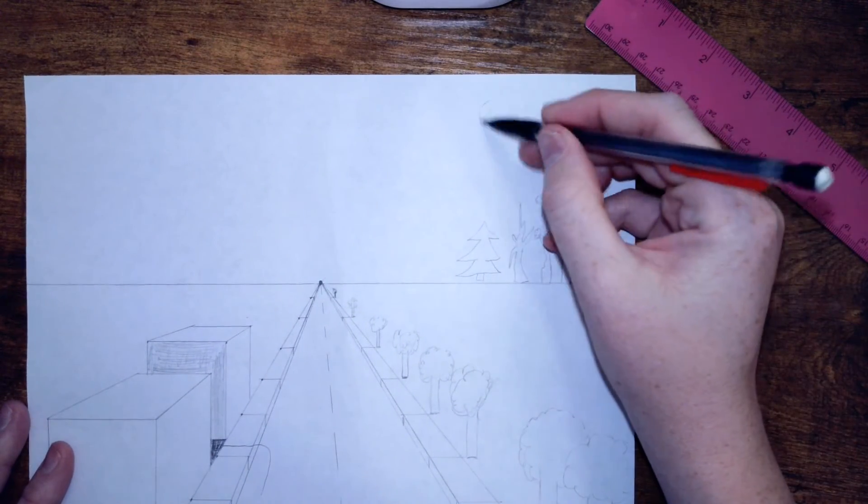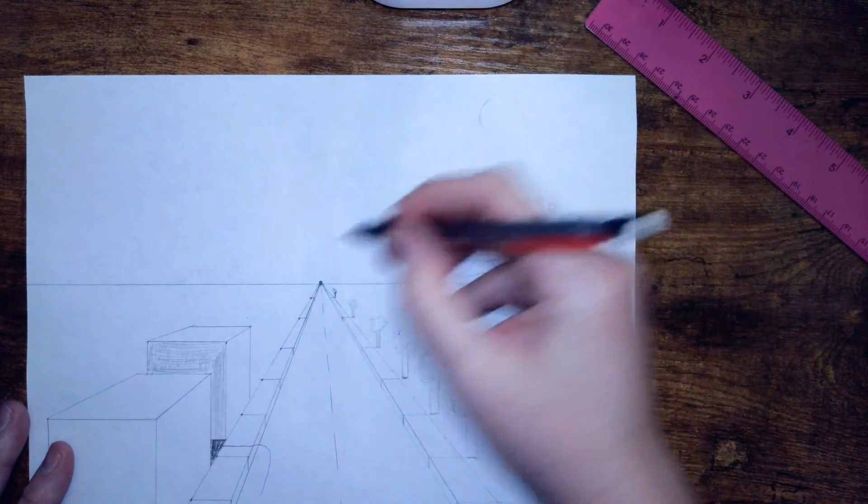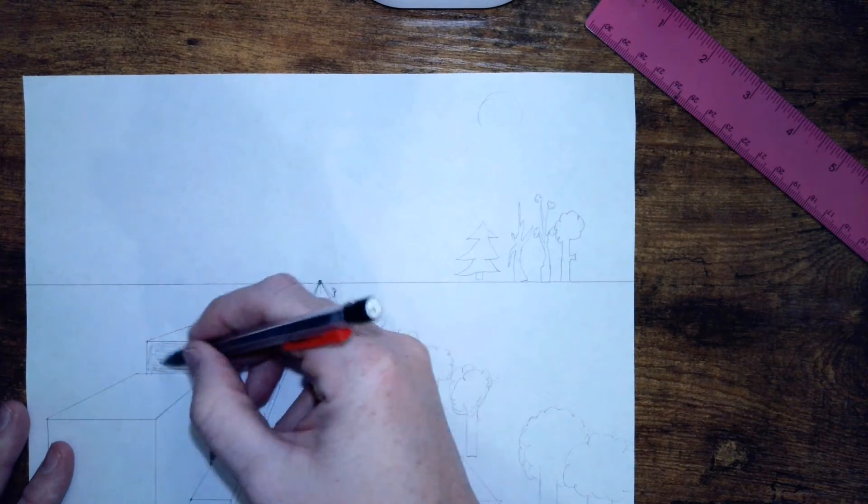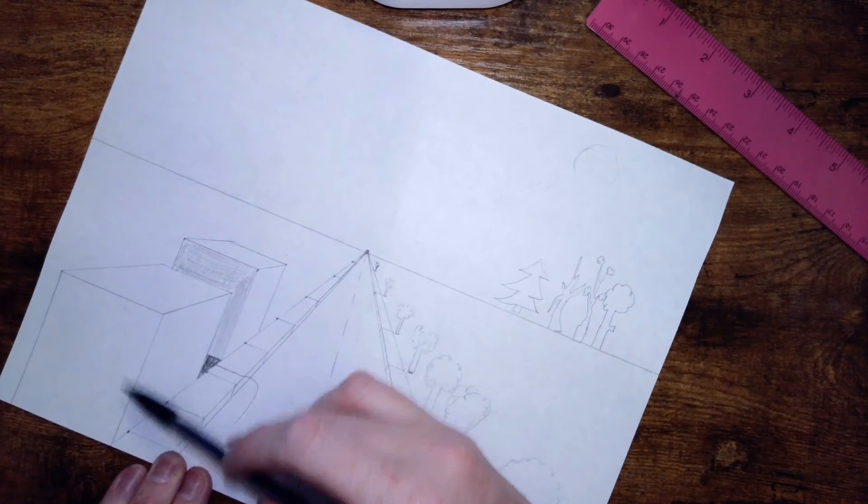If I know the sun is over here and it's shining down this way, it's going to hit the back side of these buildings and the front. It's not going to hit these sides, so that's why we're shading it in.